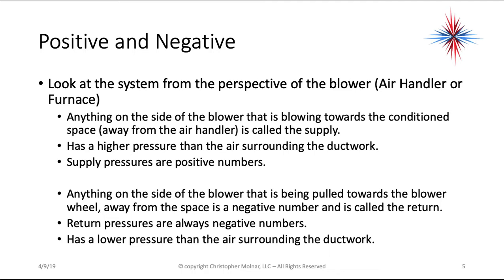We also have to look at the positives and negatives of air pressure. From the system perspective, you're at the blower in the air handler or furnace. Anything on the side of the blower that is blowing towards the conditioned space, away from the air handler or furnace, is called the supply. It has a higher pressure than the air surrounding the ductwork — supply pressures are always positive numbers. Anything on the side of the blower being pulled towards it is called the return, and return pressures always have a negative number. The supply being positive and the return being negative makes sense because we want to pull the air in as a vacuum and push the air out of the supply.